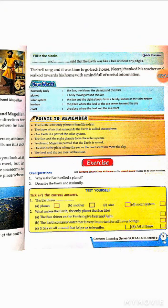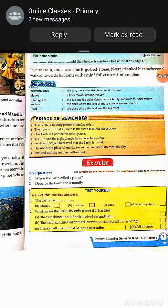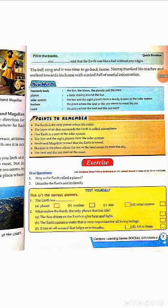Students, here we are discussing the new words of the chapter. First: heavenly body — the Sun, the Moon, the planets, and the stars are called heavenly bodies. Next: planet — a body moving around the Sun.